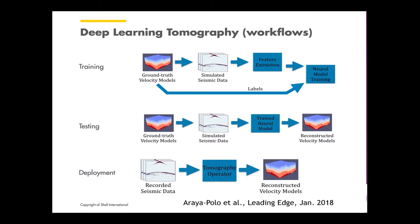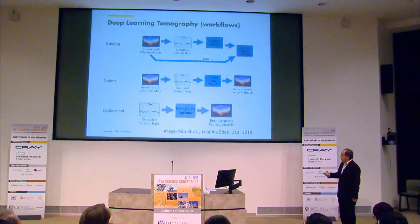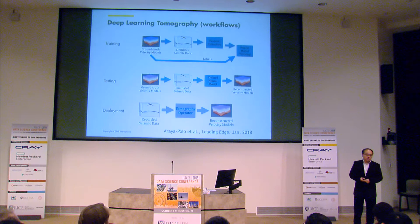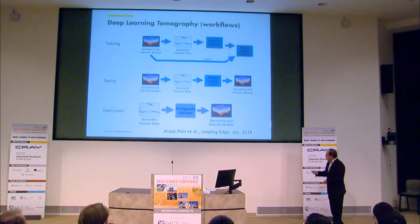Another related work from Schauer, published in The Leading Edge earlier this year, trains a tomography operator replacing it completely with a neural network. They create features and train the model with ground truth velocity models, so that from raw recorded data, the neural network can produce a velocity model. The paper shows very encouraging results, though the question remains from a research perspective whether a data-driven model can truly replace a physics-based solution.